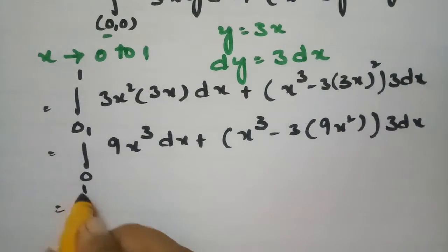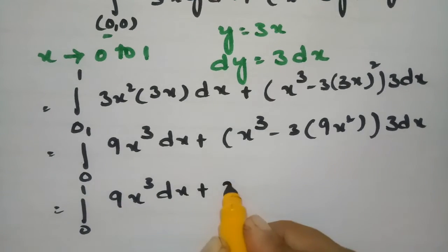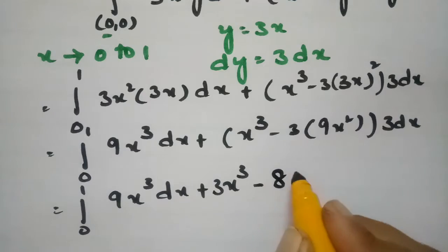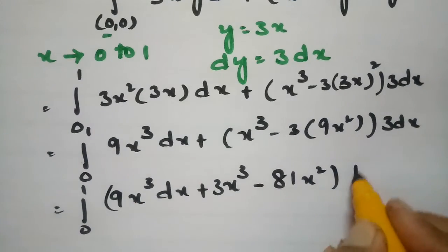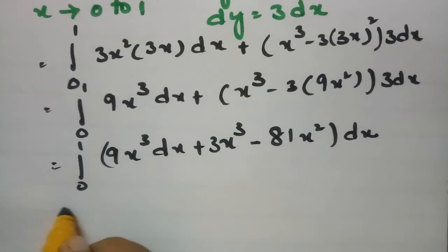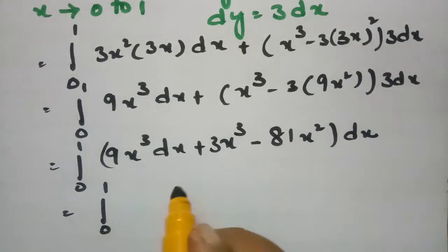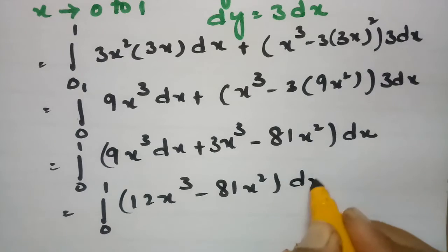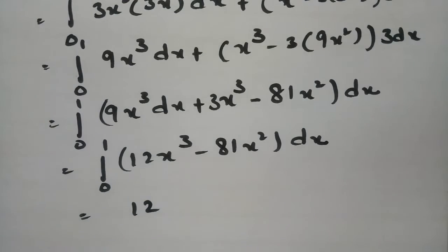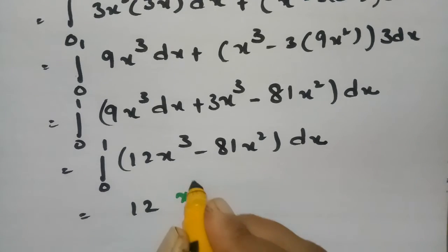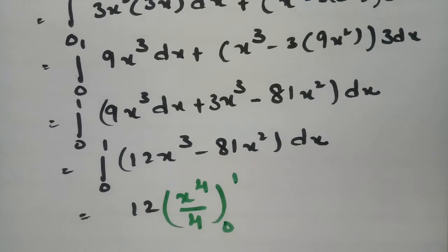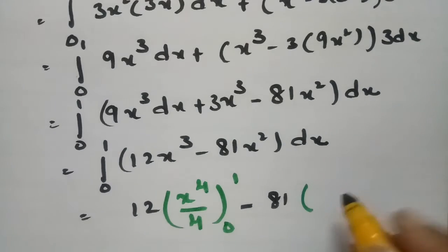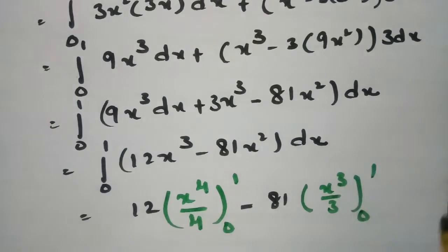So this value is integral from 0 to 1. After simplification this becomes x squared terms, and we get x squared minus 81x squared into dx. For x squared the integration is x cubed by 3, between the limits 0 to 1.